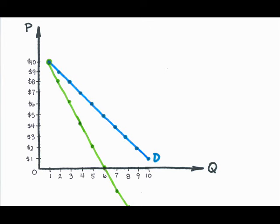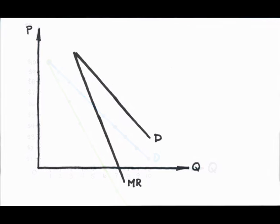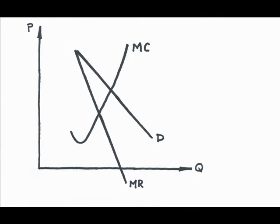To determine the monopolist's chosen output, I need to be able to find the output at which marginal revenue equals marginal cost, so I also need to add a marginal cost curve. Because marginal cost looks the same no matter what the market structure is, all I need to do is add our usual J-shaped marginal cost curve to the existing diagram. Now, I can see the monopolist's profit-maximizing output, Q star.